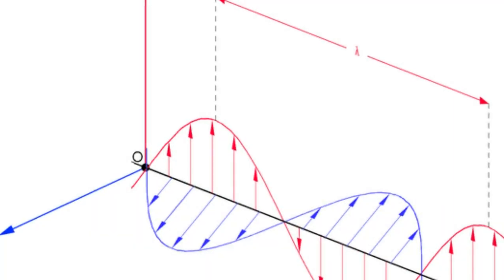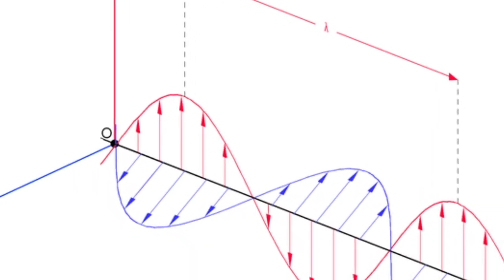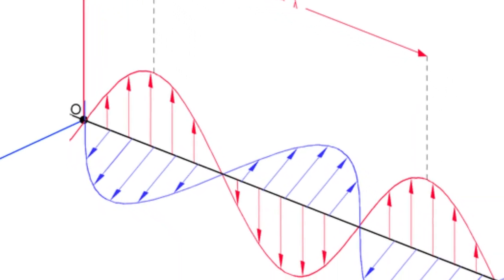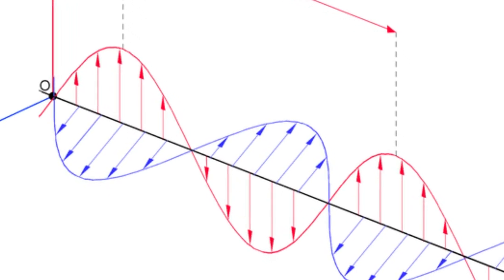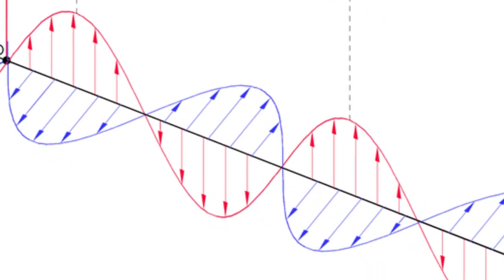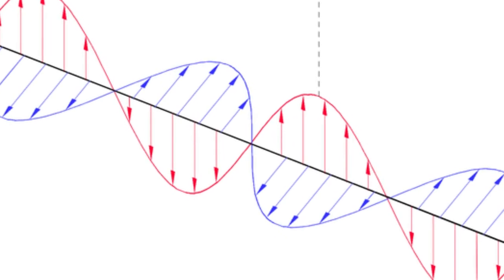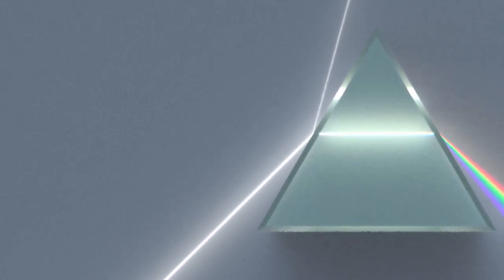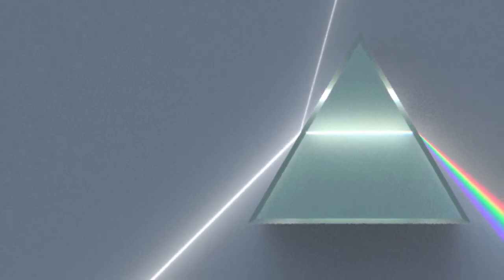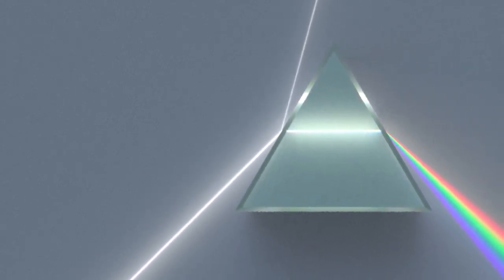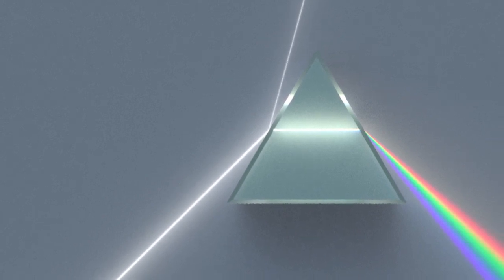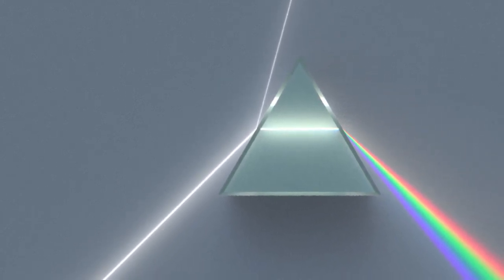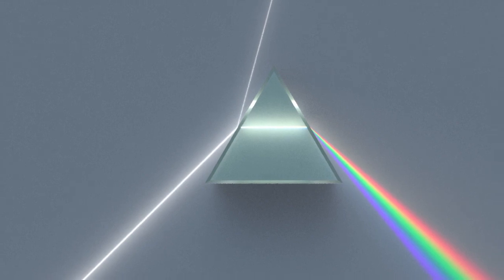Light is an electromagnetic phenomenon that can travel at extremely high speed, even through empty space. But what happens when light is suddenly forced to encounter a new material, a material it had not already been traveling in? We will begin to explore the transport of light through materials, and the results of what happens when light encounters boundaries between materials in this portion of the course.